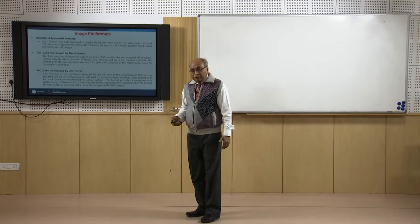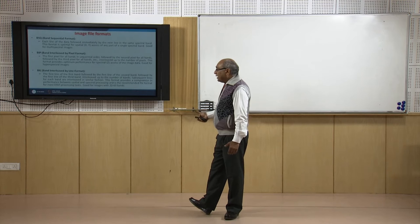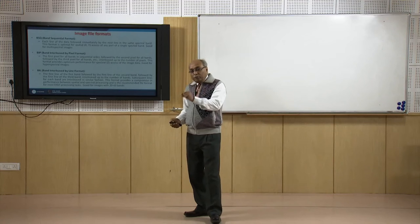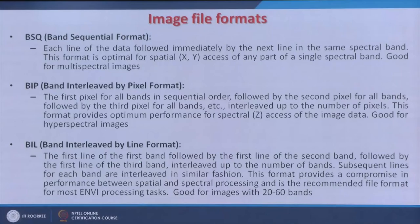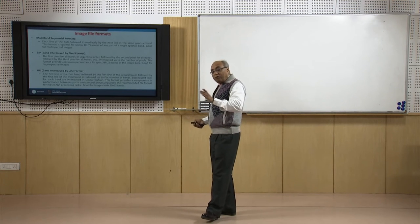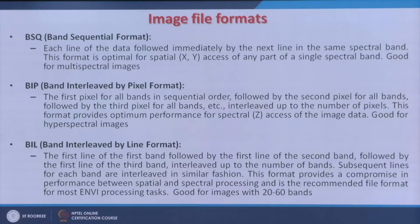The third popular type is BIL — Band Interleaved by Line. Here, instead of pixel, an entire line (one row) is written first for band 1, then the first row of band 2, then band 3, and so on. So all first lines of all 4 bands are written first in sequence, then the second lines of all bands. This format provides a compromise between spatial and spectral processing and is recommended for most ENVI processing tasks — good for images with 20–60 bands.